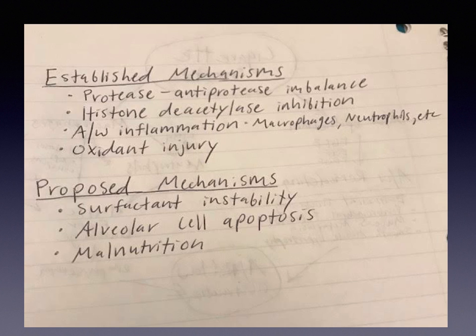Overall, inflammation and oxidative stress cause damage to airspace structure and disturbance of normal maintenance of alveolar structure. Research shows that protease-antiprotease imbalance causes emphysema, and additionally, apoptosis has been shown to cause emphysema. Being able to identify the cellular and molecular mechanisms involved in the development of emphysema is very important so that we can figure out new targets for therapeutic intervention.